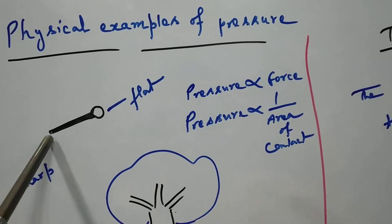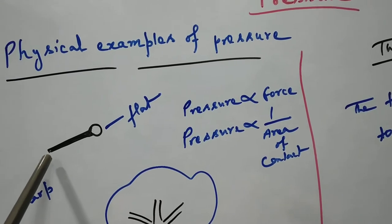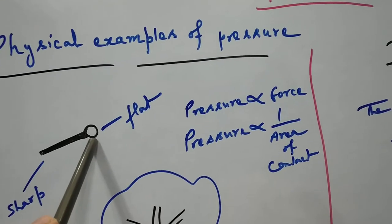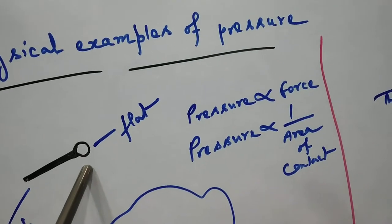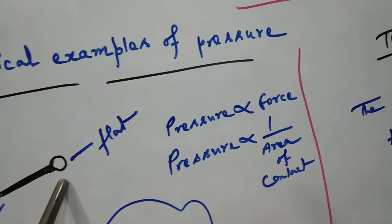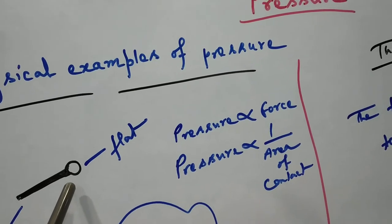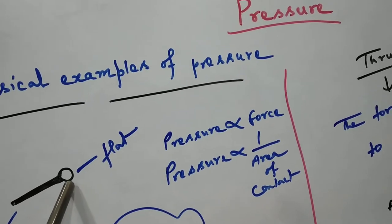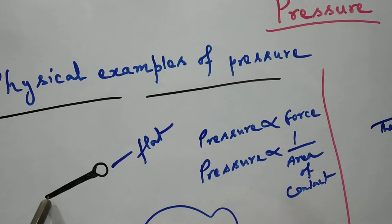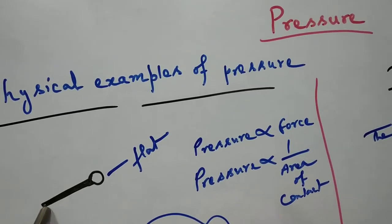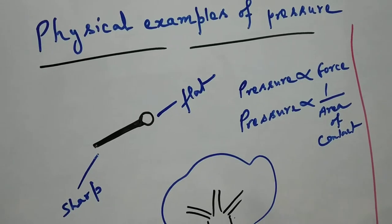The less the area of contact, the more the pressure will be. So here the area of contact is very less, and for the same amount of force the pressure on the sharp side will be more than the pressure on the blunt side. If we use the flat side to pierce into a wall, less pressure will be exerted because that area is more. That's why we use the sharp side instead of the blunt side when we want to pierce a nail into a wall.